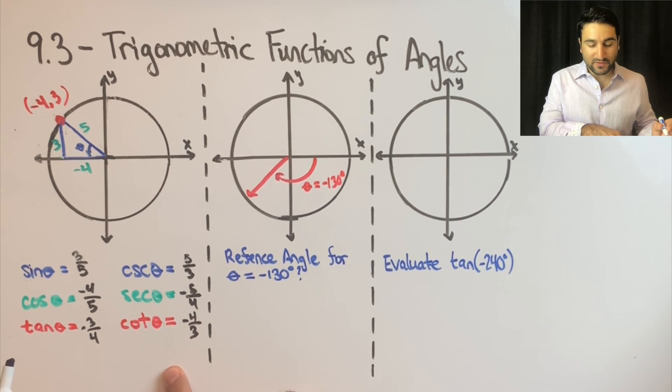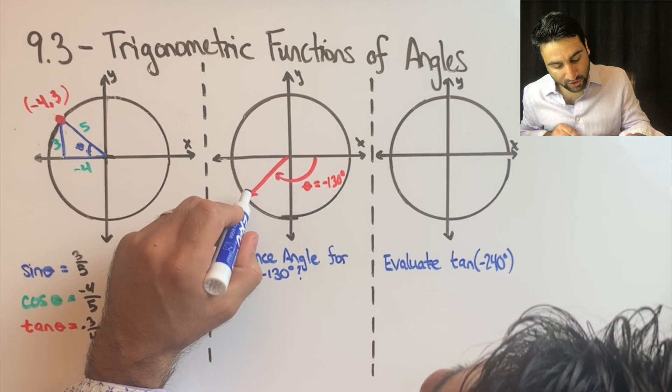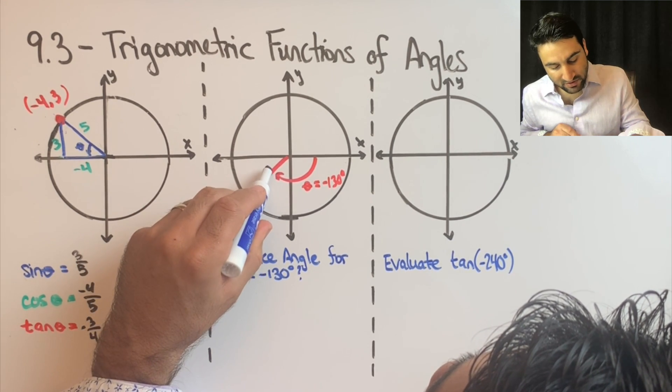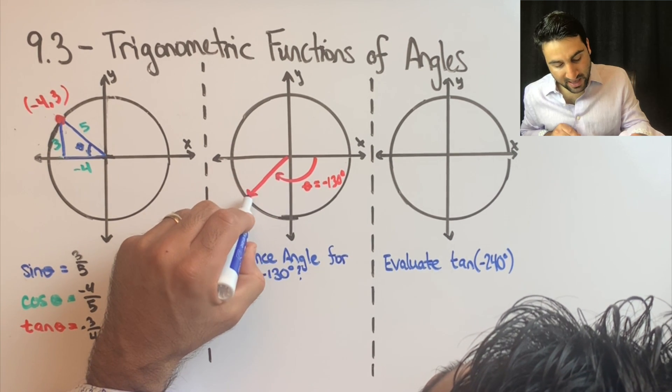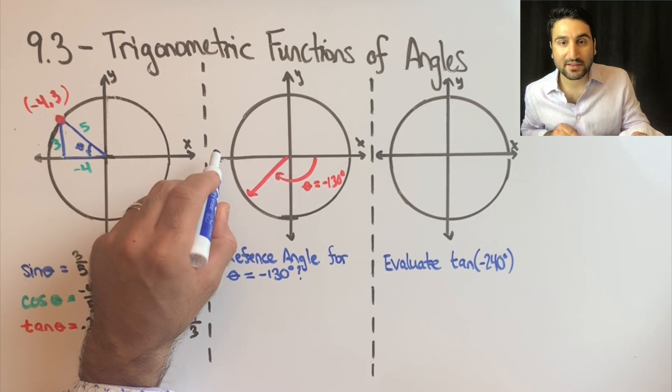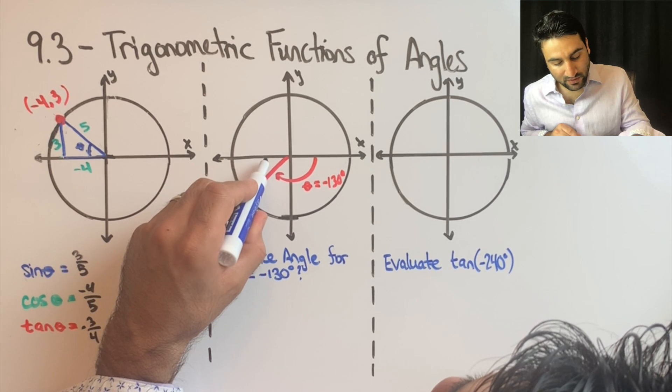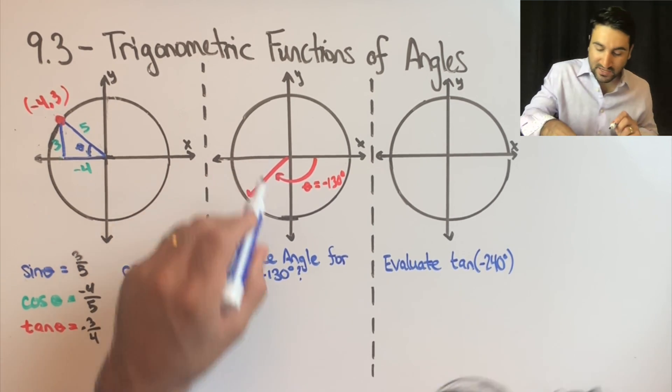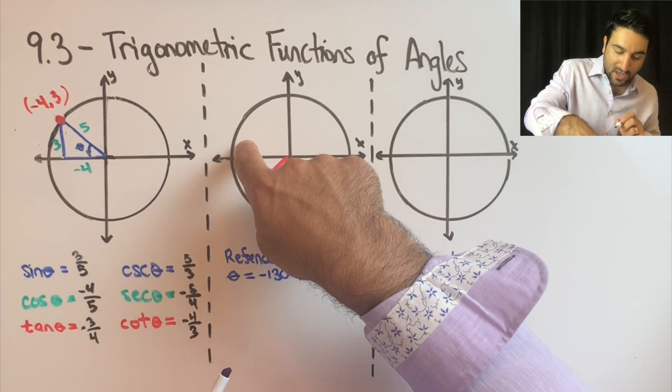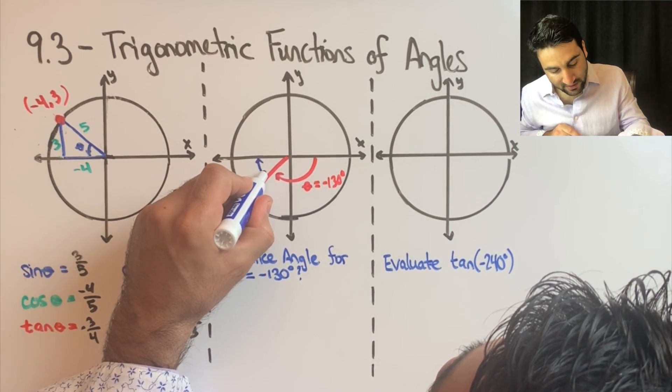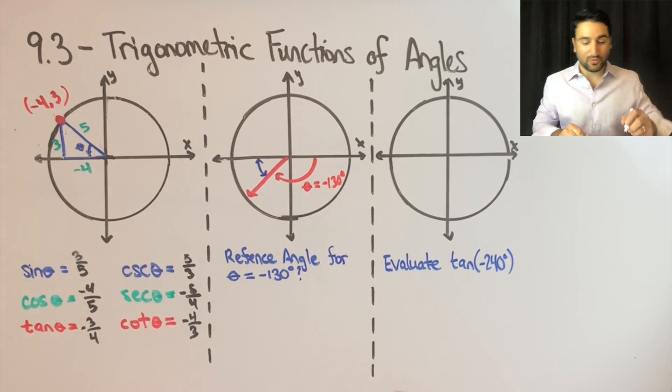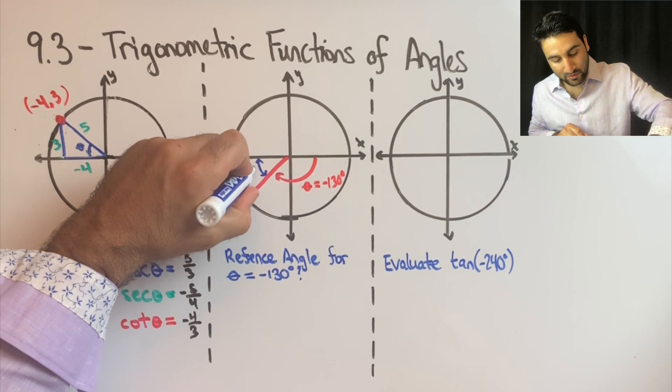And we need to find the reference angle. If you remember here, we discussed reference angle is the closest angle between this hypotenuse and the nearest x-axis, which is this one. There's an x-axis here, x-axis here, but we're going to choose the closer one. This angle here in blue, we'll call it phi.